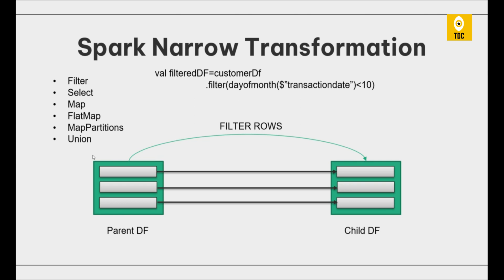To keep the definition simple: a narrow transformation is a transformation of data without any shuffle involved. Shuffle here refers to the shuffling of partitions across the cluster. You can find many definitions for narrow transformation, but this is the simplest way to understand it.